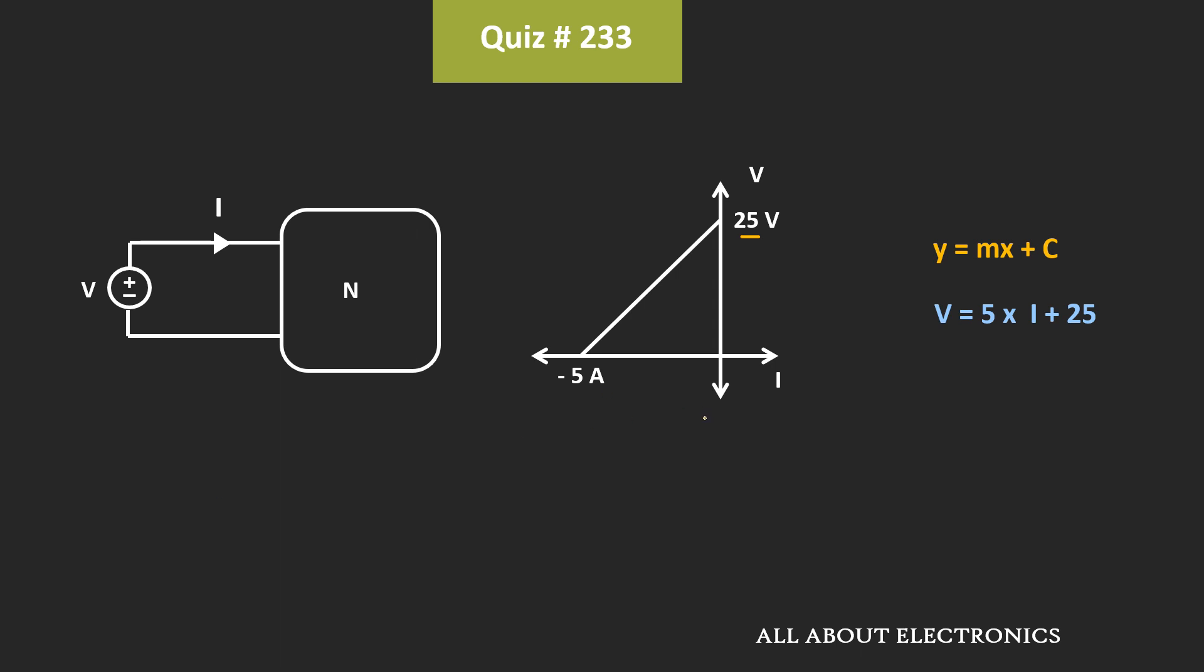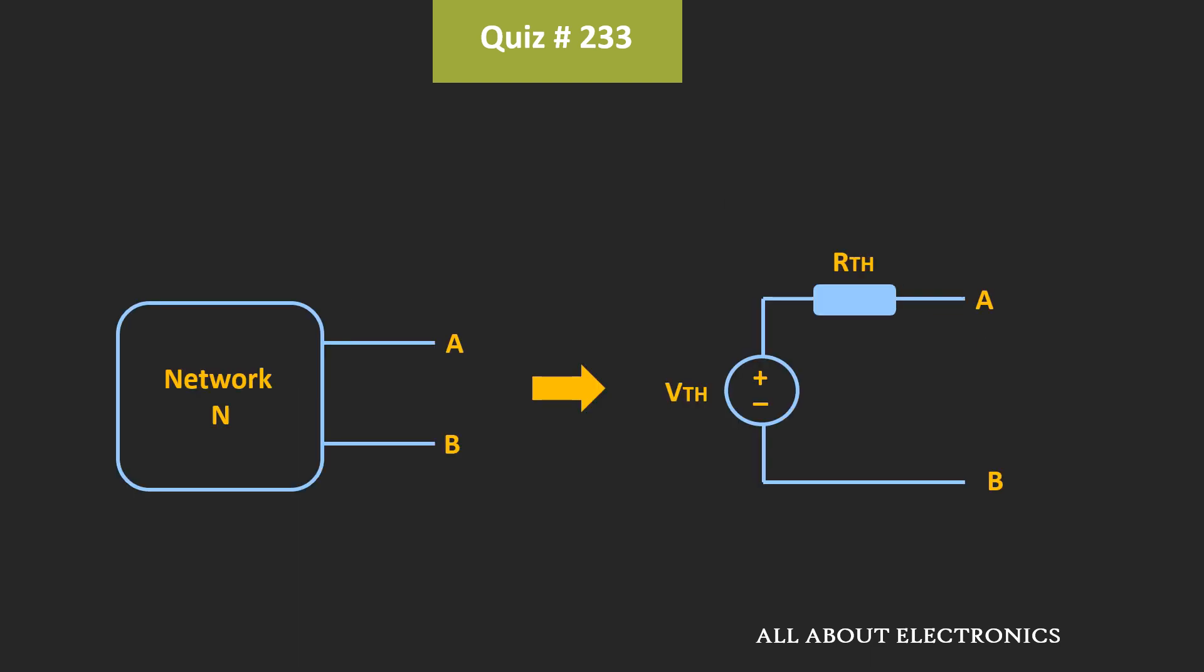So basically, the relationship between V and I can be represented by this expression. Now, let's replace this network N by the Thevenin's equivalent network. So we know that any network N can be replaced by the Thevenin's equivalent network, which contains the Thevenin's equivalent voltage in series with the Thevenin's equivalent resistance.